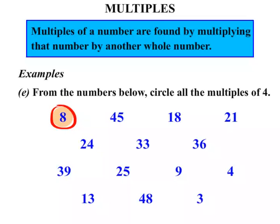45, does 4 go into 45? No. Does 4 go into 18? No. See how important it is to know your times tables. Does 4 go into 21? No. Does 4 go into 24? Well yes it does, it goes in six times so that is a multiple of 4.